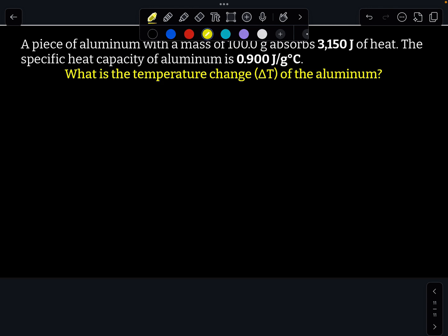So this one states, a piece of aluminum with a mass of 100 grams absorbs 3,150 joules of heat. The specific heat capacity of aluminum is 0.900 joules per grams degrees Celsius. What is the temperature change of the aluminum?